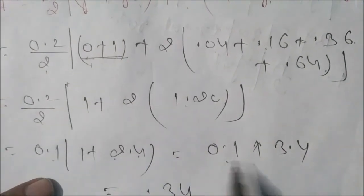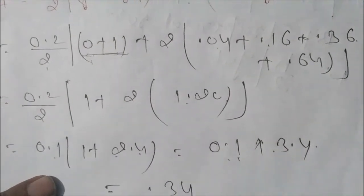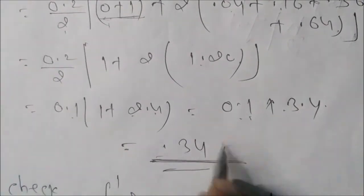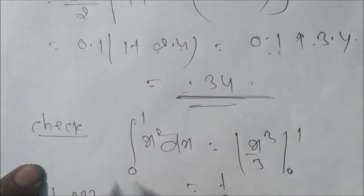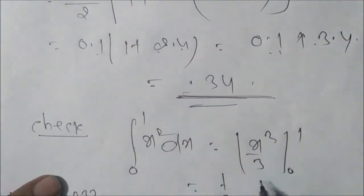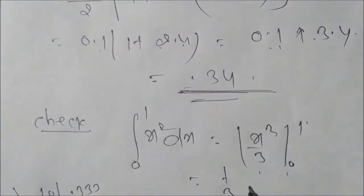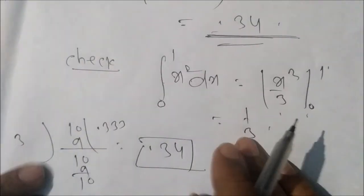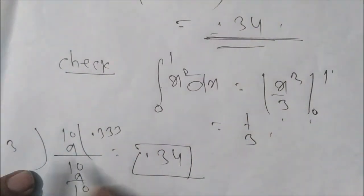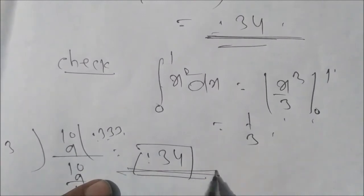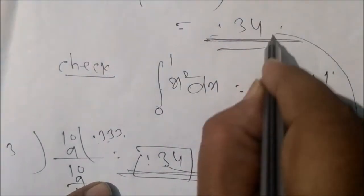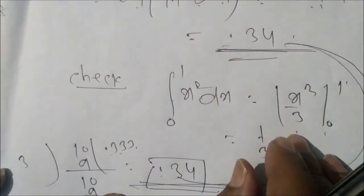You can check either right or wrong from simple integration 0 to 1 x square dx equal to x cubed by 3, 0 to 1, that is 1 by 3. You divide 1 by 3 you will get 0.333. Therefore 0.34, hence our answer is correct. This is trapezoidal rule.